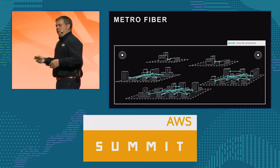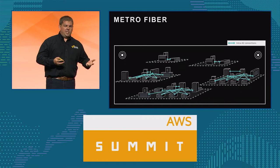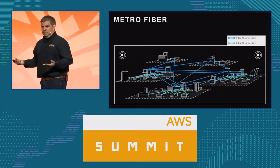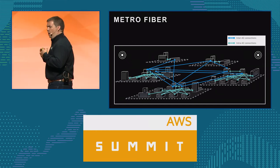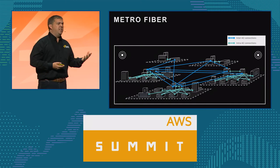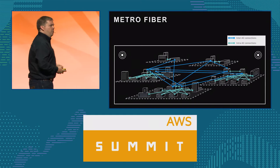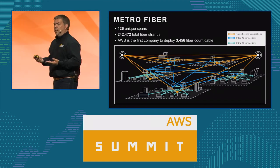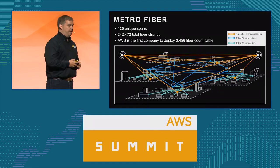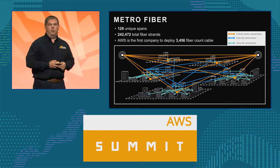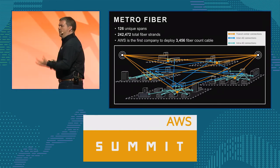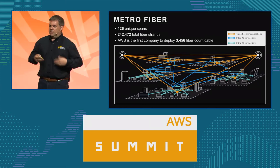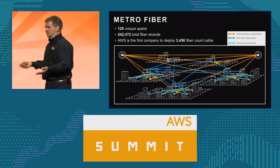We've got these data centers and availability zones within the AWS region. We need to connect them together — first connecting all buildings within individual availability zones, then connecting those availability zones to each other. We recommend deploying services in a highly available fashion across multiple availability zones. From there you want to talk to the wider global network and out to the internet — that's where the transit centers fit in. In this particular real AWS region example, there are 126 unique spans of connectivity, over 240,000 individual fiber strands providing connectivity in this one region alone. We have some cables that carry over 3,000 fibers in an individual cable.